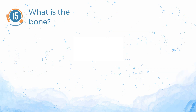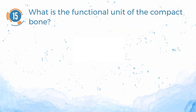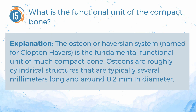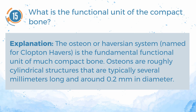Number 15. What is the functional unit of the compact bone? A. Osteon. B. Trabecula. The answer is A — osteon. The osteon, or Haversian system, named for Clopton Havers, is the fundamental functional unit of much compact bone. Osteons are roughly cylindrical structures that are typically several millimeters long and around 0.2 millimeters in diameter.